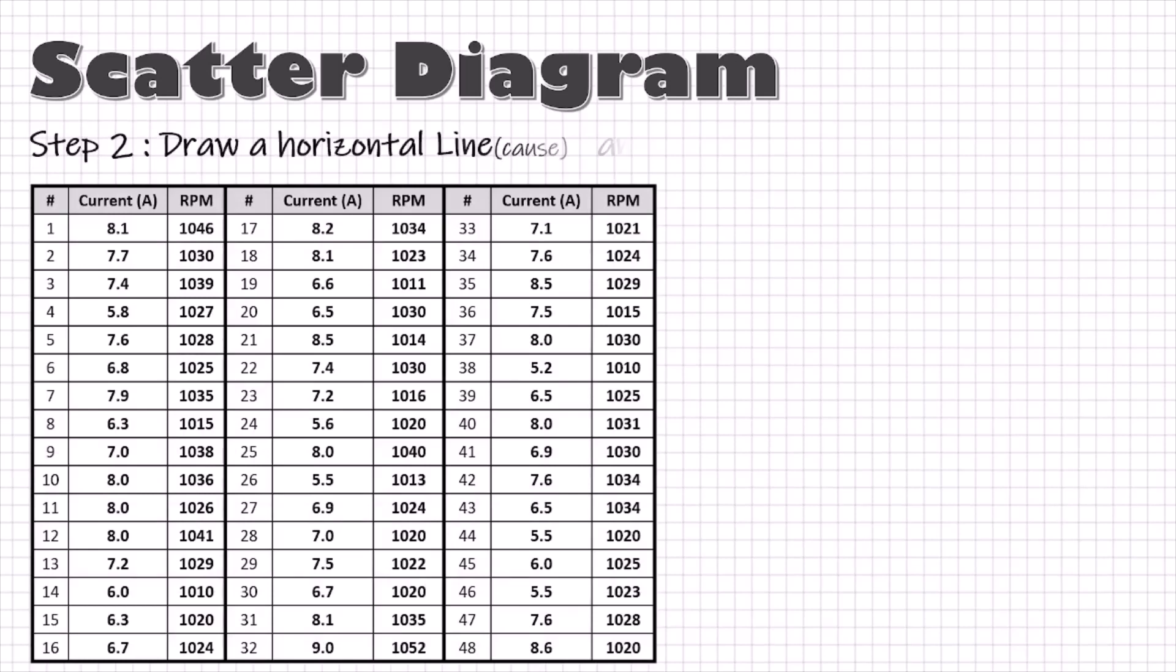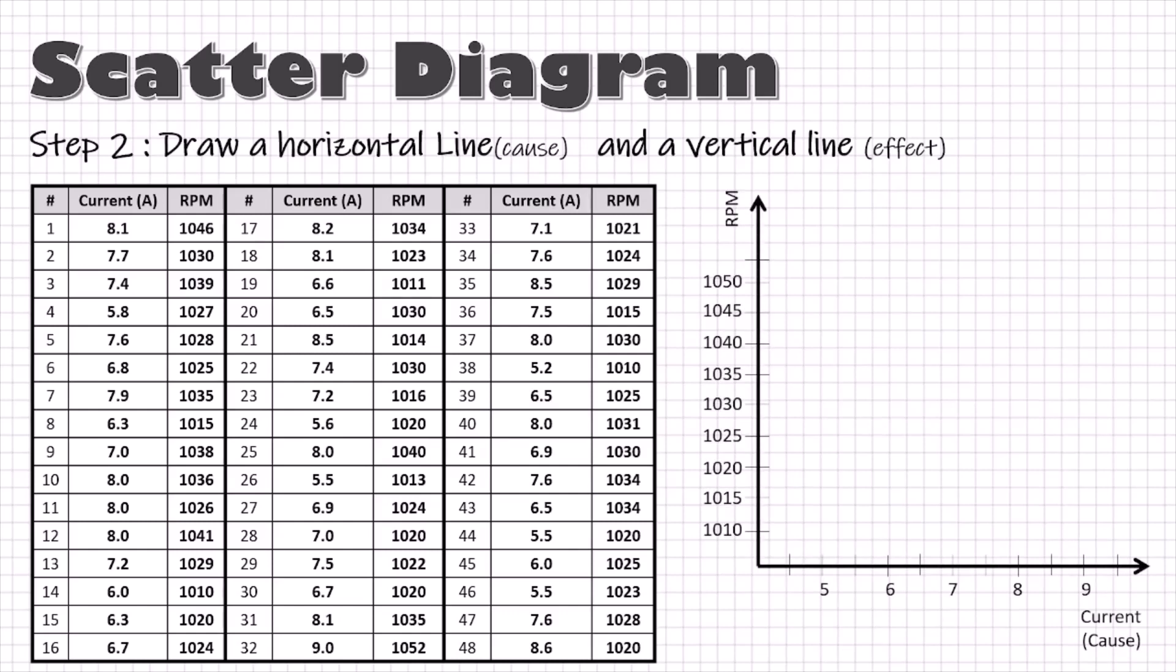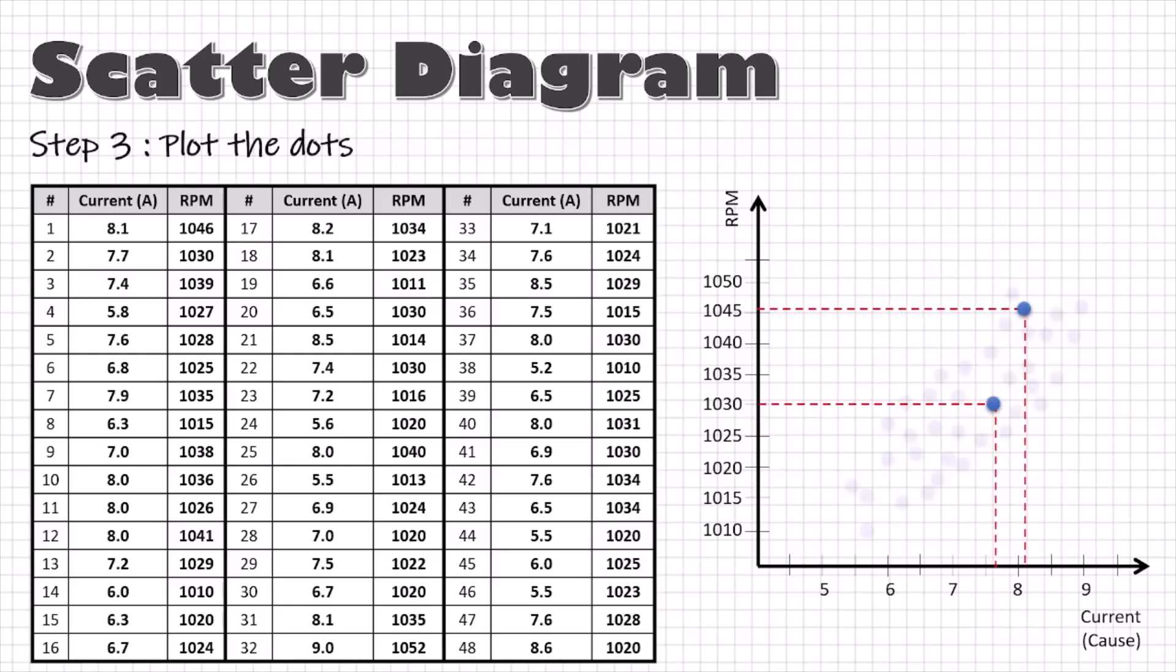Then draw a horizontal and a vertical axis of the graph. The cause values are usually placed on the horizontal axis and the effect values on the vertical axis. Now keep on plotting the dots on the graphs for each data point. If data values are repeated and fall on the same point, you can make a concentric circle. And then another circle if required. That's it.